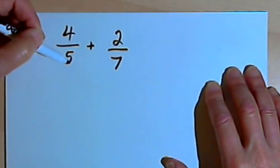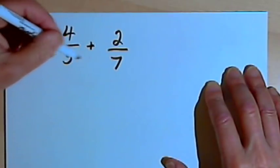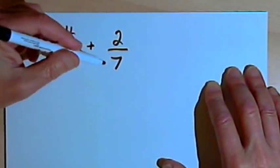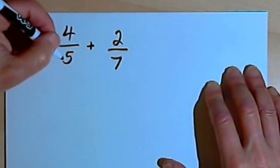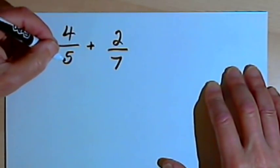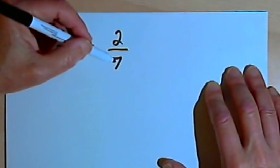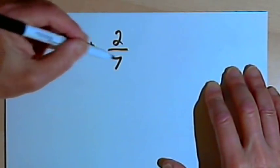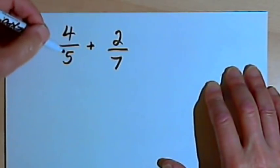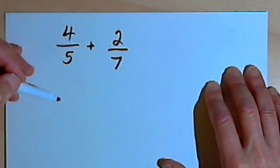The common denominator is a number that I can turn both of the denominators into by multiplication. I could turn a 5 into a 35 if I multiplied it by 7, and I could turn a 7 into a 35 if I multiplied it by 5. So 35 could be my common denominator. Here's how I'm going to get those fractions into a form with that common denominator.